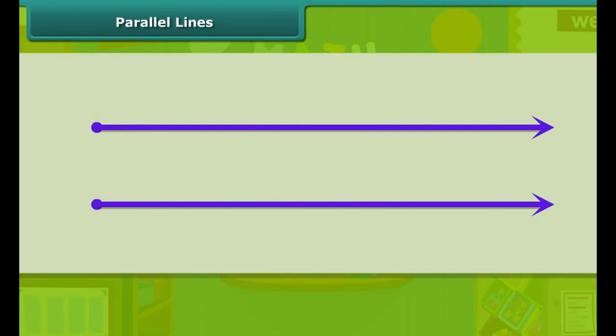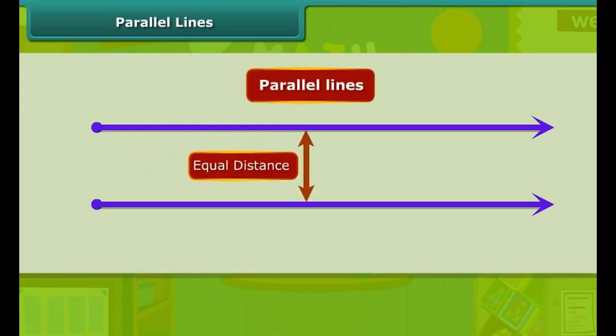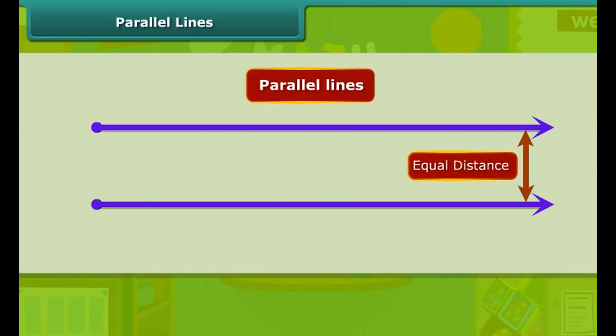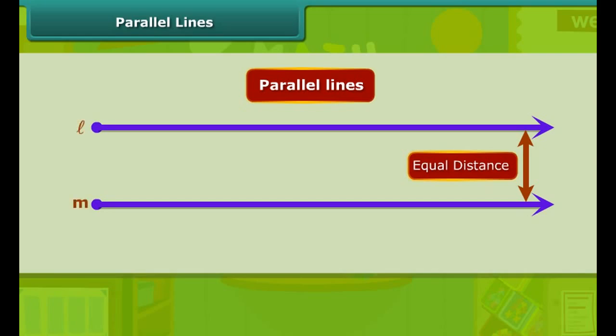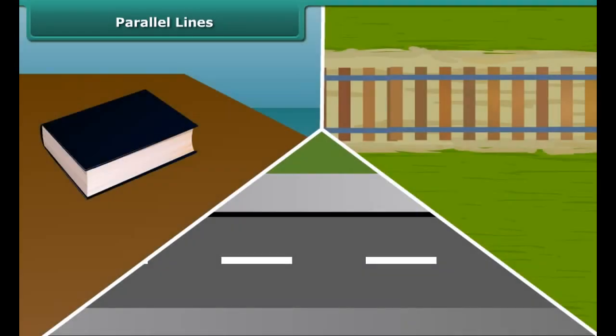A variety of examples around us has intersecting lines. Another set of lines are those which do not intersect. Such lines, which do not meet at all, are called parallel lines. The distance between these lines remains constant.